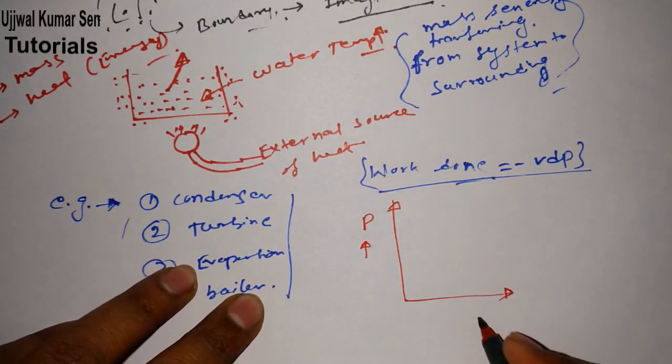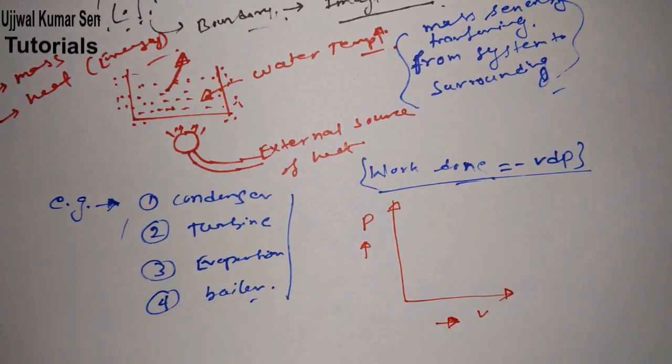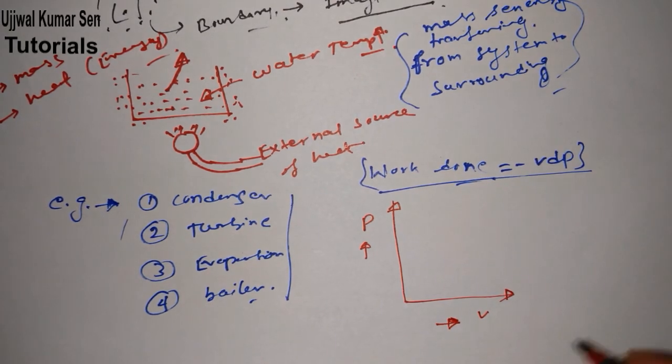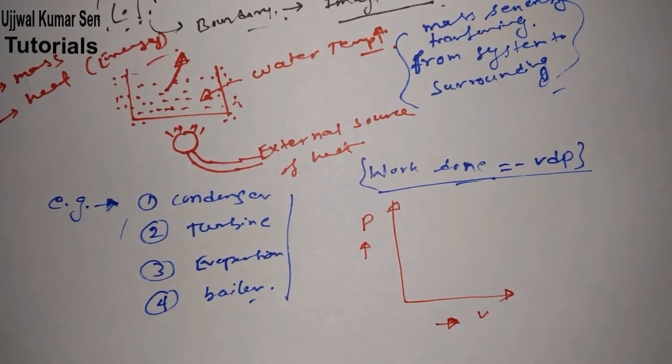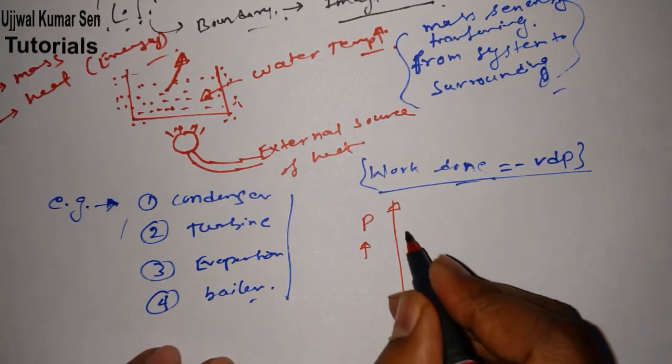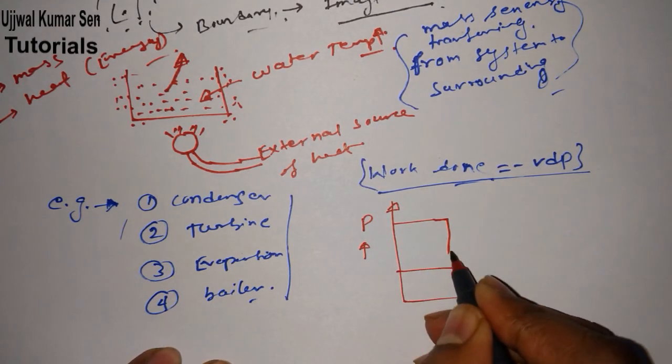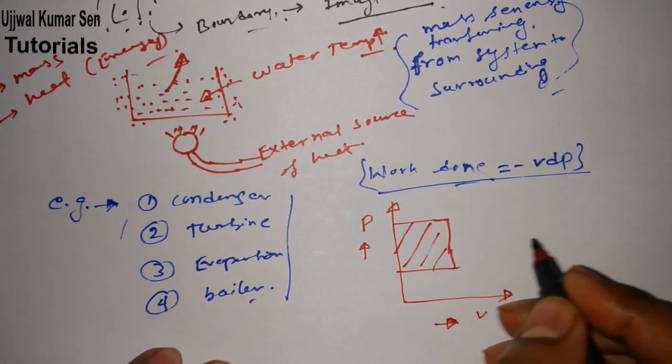Another most important thing I would like to share with you: if you wanted to draw a PV diagram for showing work done, in case of closed system what we do is we use volume axis or x-axis. But in case of open system, we draw that work done diagram in the pressure axis.